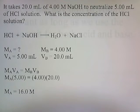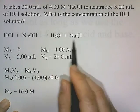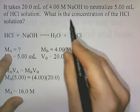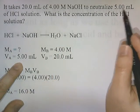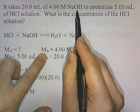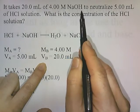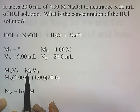It takes 20 mL of 4-molar sodium hydroxide to neutralize 5 mL of hydrochloric acid solution. What is the concentration of the hydrochloric acid solution? The reaction is HCl and NaOH forming water and sodium chloride. The molarity of the acid is what we're solving for. The volume of the acid is 5 mL, the molarity of the base is 4 molar, and the volume of the base is 20 mL. The formula we'll use is MA×VA = MB×VB.